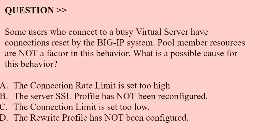Next question: Some users who connect to a busy virtual server have connections reset by the BIG-IP system. Pool member resources are not a factor in this behavior. What is a possible cause for this behavior? Option A: The connection rate limit is set too high. Option B: The server SSL profile has not been reconfigured. Option C: The connection limit is set too high. Option D: The rewrite profile has not been configured.